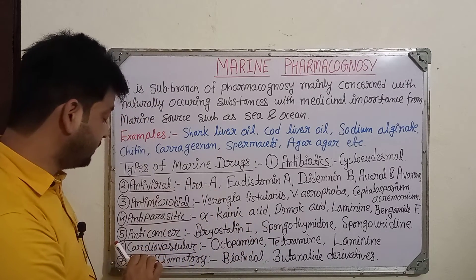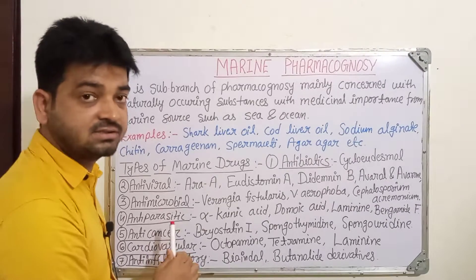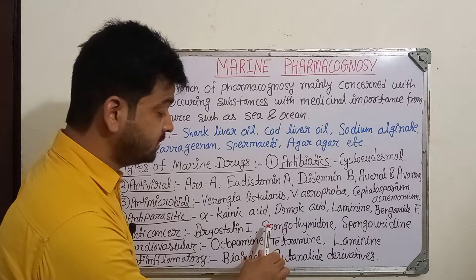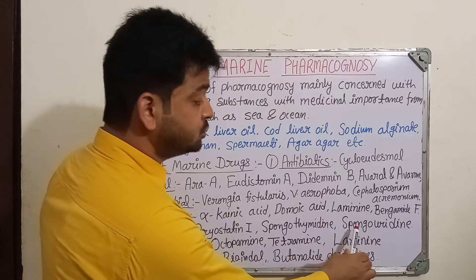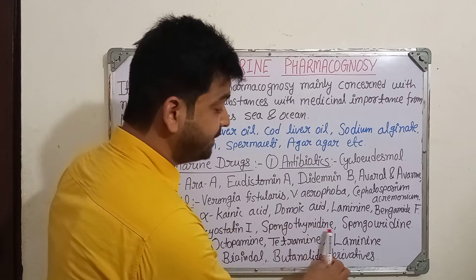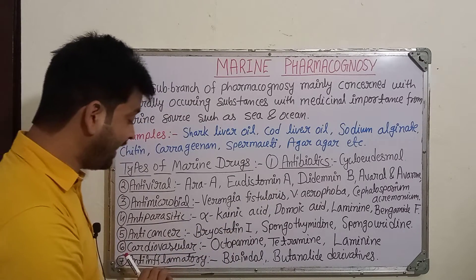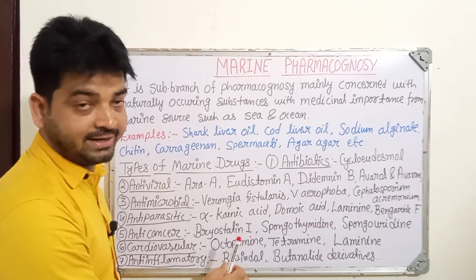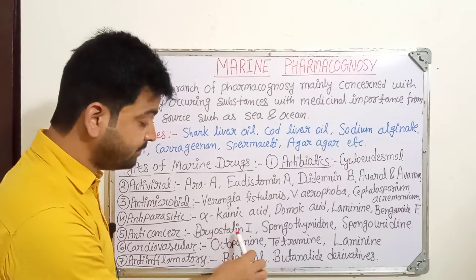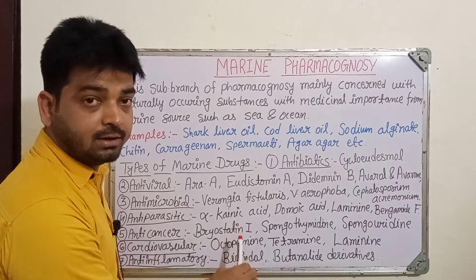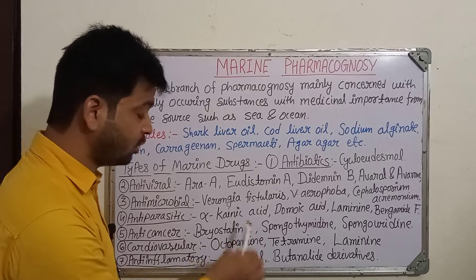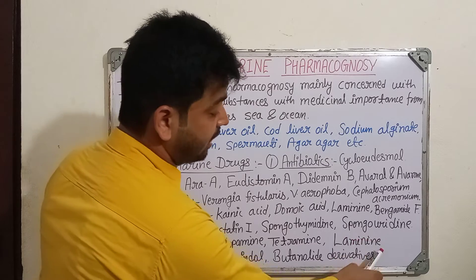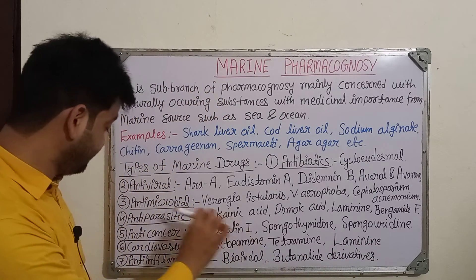The fifth type is anti-cancer drugs - compounds which act on cancerous cells. Examples are bryostatin 1, spongothymidine, and spongouridine, which are easy to remember. The sixth type is cardiovascular drugs, which act on cardiac muscles. Octopamine is obtained from the octopus - a marine animal - and can be used for cardiovascular purposes. Other examples include tetramine and laminin.